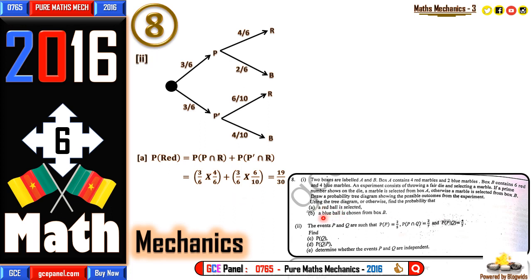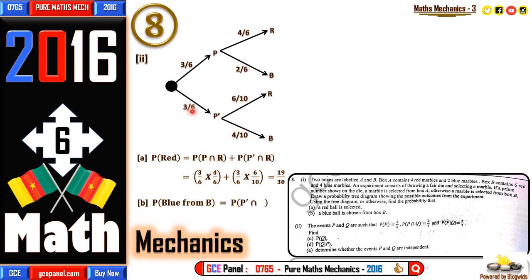Part (b): find the probability that a blue ball is selected from box B. This is the case where a not-prime number shows, so we go to box B and select blue. The probability of blue from box B equals three over six times four over ten, which simplifies to one on five.